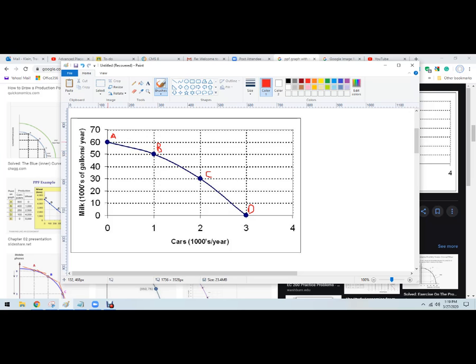Going from A to B, we're going to gain one, but that's not the opportunity cost. The opportunity cost is what we give up, and we're giving up 10 units—10 units of milk, which is really 10,000 gallons of milk per year.